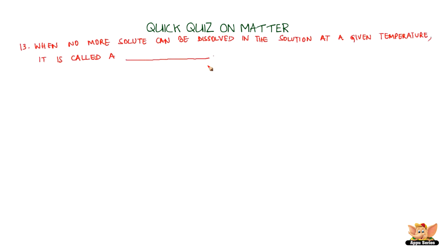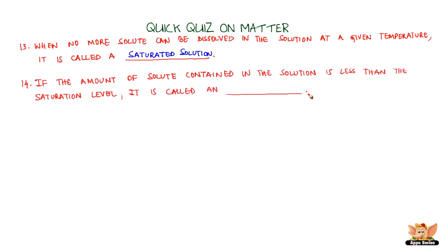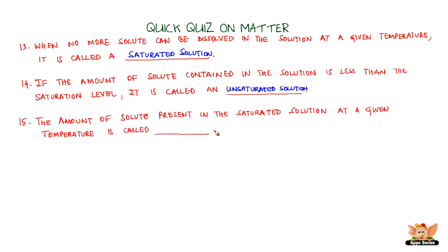When no more solute can be dissolved in the solution at a given temperature, it is called a saturated solution. If the amount of solute contained in the solution is less than the saturation level, it is called an unsaturated solution. The amount of solute present in the saturated solution at a given temperature is called solubility.